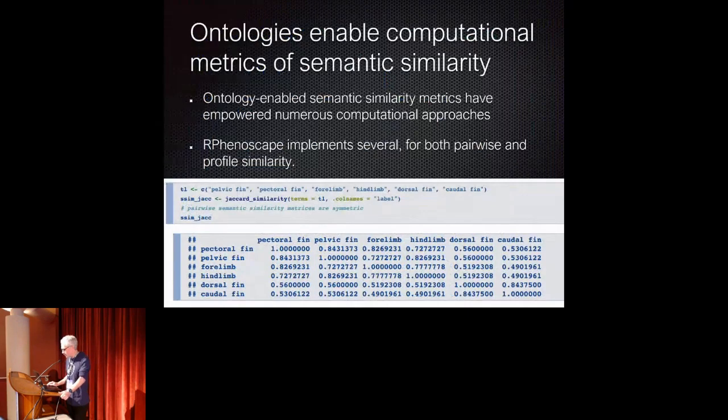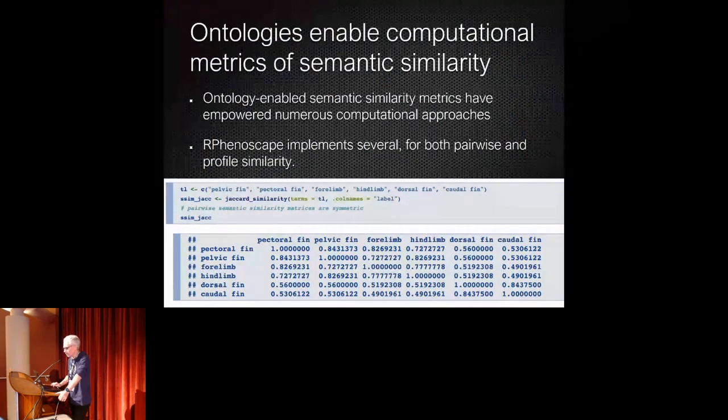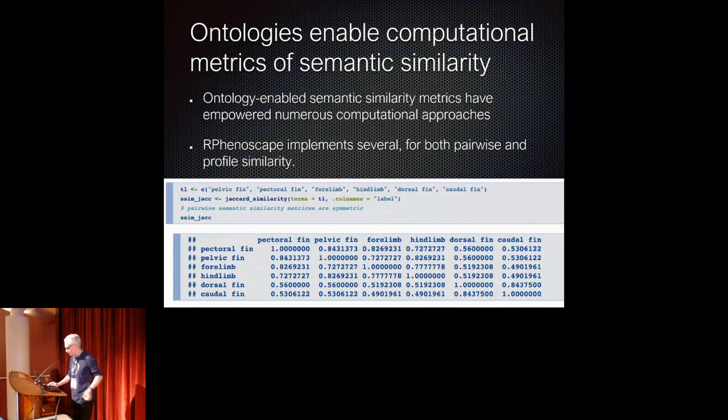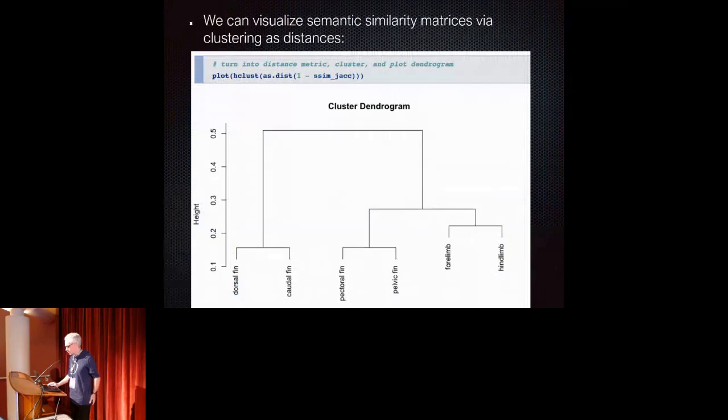And so what I finally want to get to is that ontologies, as we've heard earlier, also enable computational metrics of semantic similarity. And so just for example here, how this is accessible computationally within the RPhenoscape package, if we just look at a number of anatomy terms that will probably make sense to most people here for illustration using pectoral fin, pelvic fin, femur and hind limb, and then dorsal fin and caudal fin. Here's how I can easily compute this. And then I can, instead of staring at the matrix, or I can also visualize this as a clustered dendrogram, noticing here that the dorsal fin and the caudal fin, which are unpaired fins, seem to be semantically more different from the other terms here.